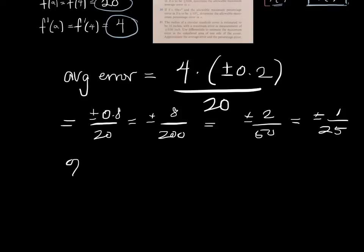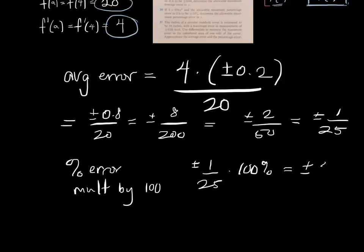For the percentage error, we multiply by 100. So 1 over 25 times 100%, of course, is an average error. Or, sorry, a percentage error of plus minus 4%. So there we go. 1 over 25, give or take, and 4%, give or take, in terms of average error and percentage error, respectively.